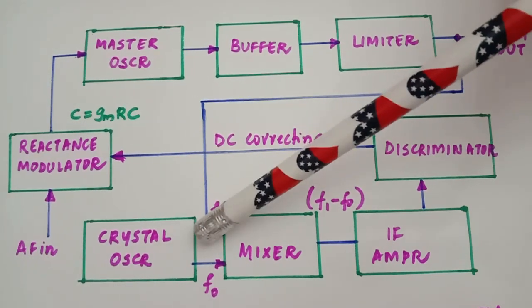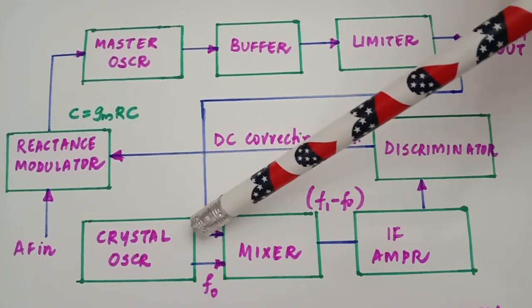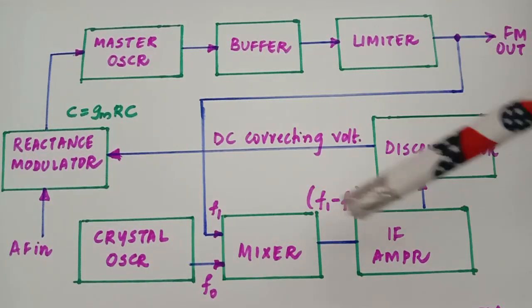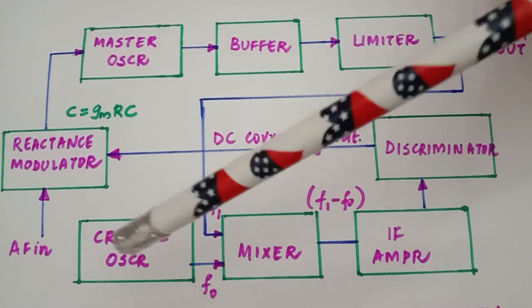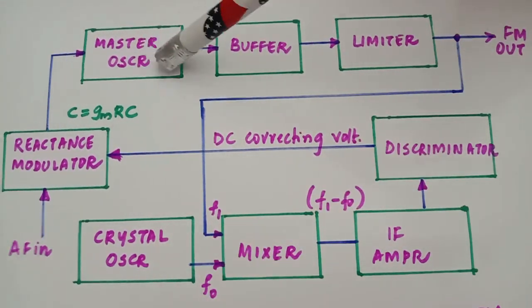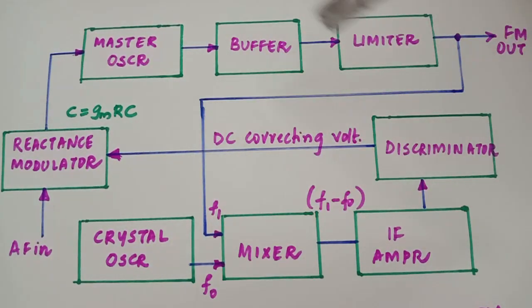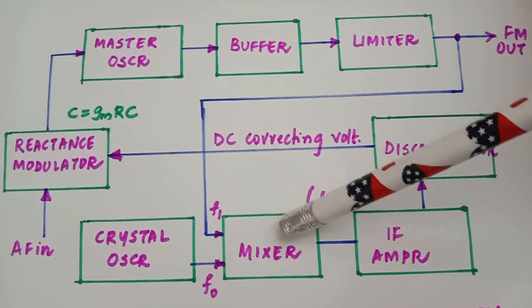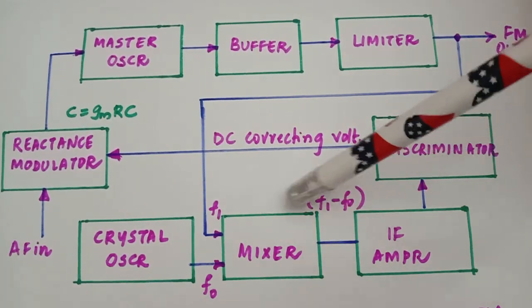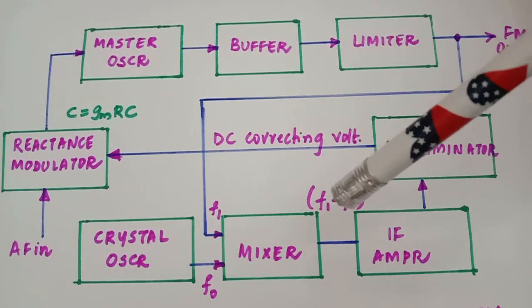In the AFC part, we have a crystal oscillator, which is known to generate a constant, stable output frequency. We also have a mixer with two inputs: one from the crystal oscillator, which generates the same frequency as the master oscillator, and the other from a portion of the FM output from the master oscillator. The mixer produces sum and difference frequencies, and what we use here is the difference frequency.